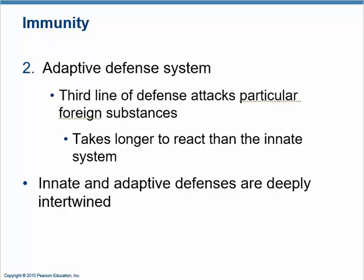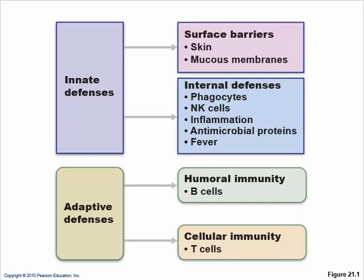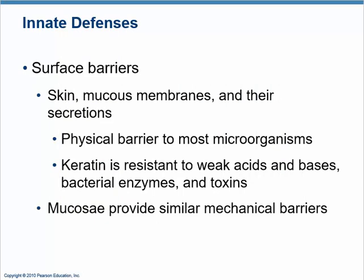The third line is the adaptive immunity, which is for a later video. The innate defenses include surface barriers keeping things out, phagocytes and natural killer cells as cellular components, inflammation and fever as processes, and antimicrobial proteins — complement and interferon. The surface barriers aren't just simple physical barriers. Tight junctions and cell-to-cell contact along the epithelium form a physical barrier. The composition of skin — like keratin — is resistant to moisture and acids.